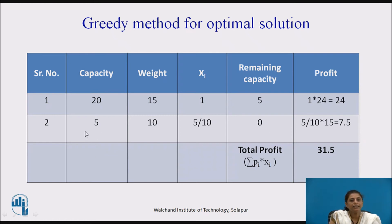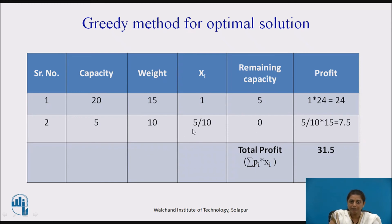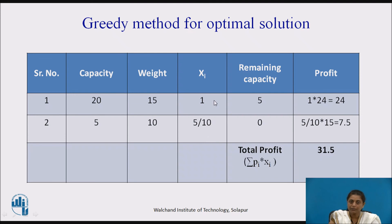Remaining capacity is 5 and the next object has weight 10. Since weight 10 is greater than remaining capacity 5, we cannot take it completely. We take as much as the capacity allows: 5 out of 10. Remaining capacity becomes 0. Profit earned is 5 by 10 into 15. Total profit is 31.5. For this given example, the optimal solution gives a profit of 31.5, and the greedy method assures an optimal solution for the fractional knapsack problem.